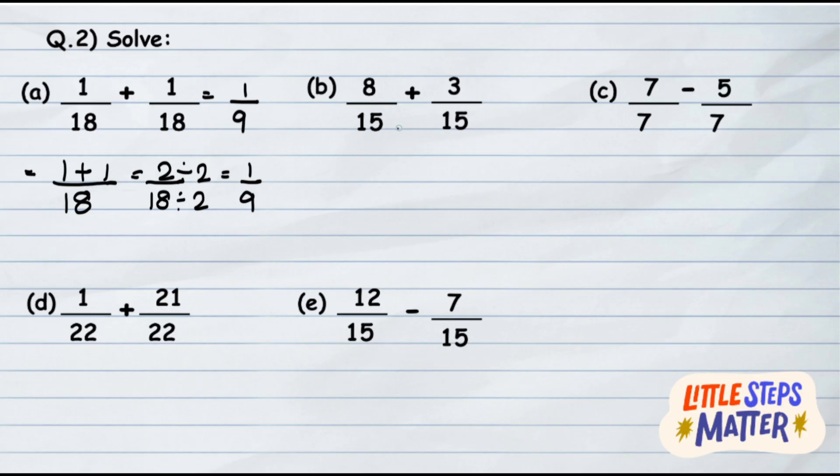Let us take another question which is 8 upon 15 plus 3 upon 15. Here again you have same denominator, so simply go and add the numerators. It will be 8 plus 3 whole upon 15, which gives you 11 upon 15. Is this the simplest form? Yes, because 11 and 15 do not go in the table of any other number except 1.